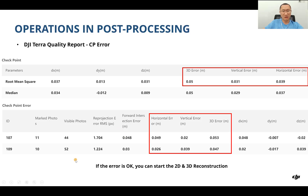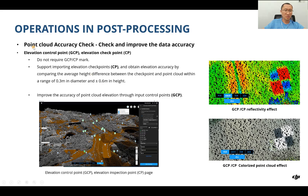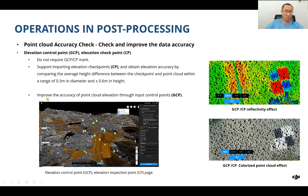In the LiDAR workflow, GCP and CP can also improve point cloud accuracy, but remember they can only help on the elevation side. So GCP here can be called an elevation control point, and CP can be called an elevation checkpoint. In the LiDAR workflow, the GCP mark operation is not required — you don't need to click points on the software. It also supports importing elevation checkpoints to obtain elevation accuracy by comparing the average height difference between the checkpoint and the nearby point cloud.